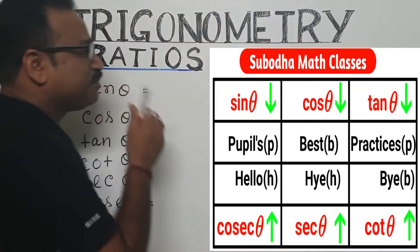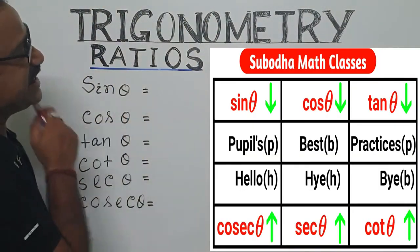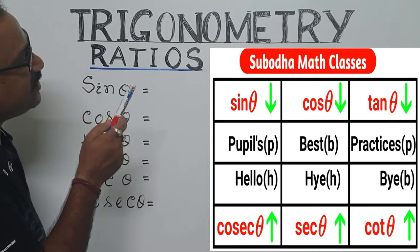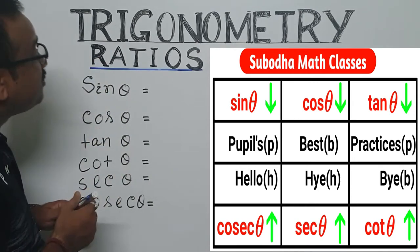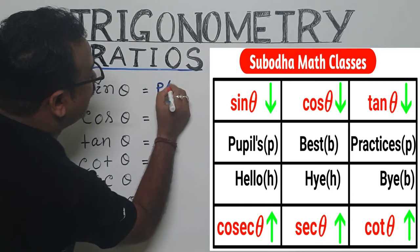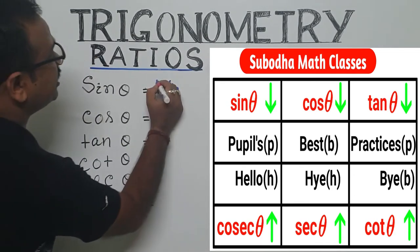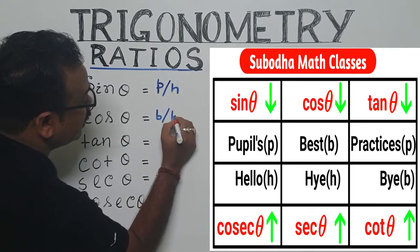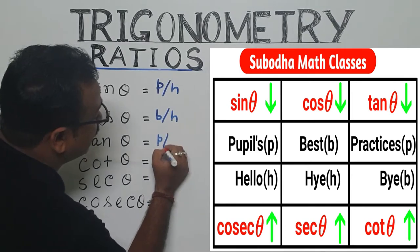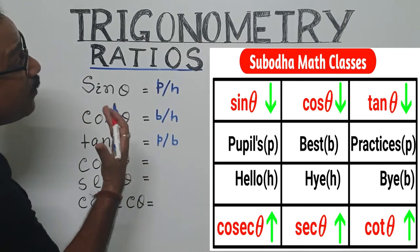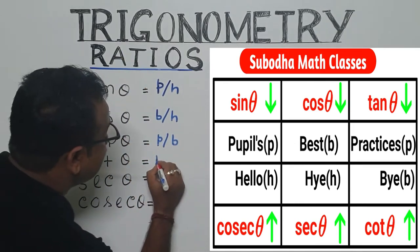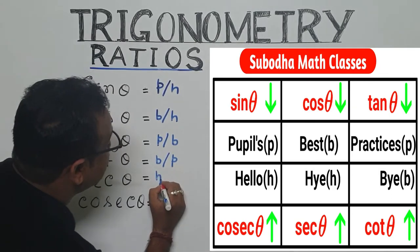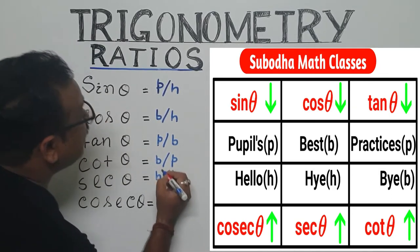Now see, People's Best Practices - Hello, Hi, Bye. Now take sin θ, then the arrow pointing down. Sin θ will be P by H. Now cos θ, arrow pointing down, that will be B by H. Now tan θ will be P by B.